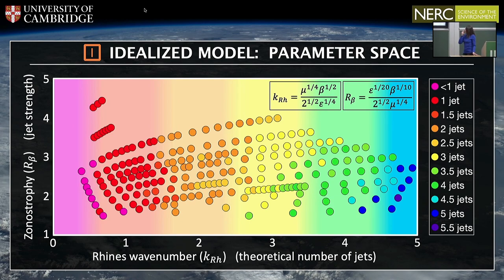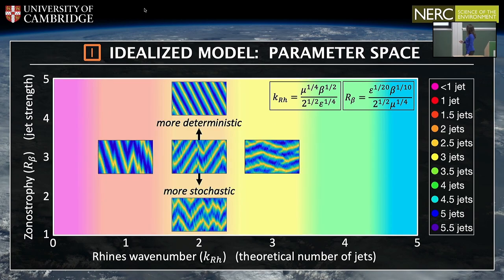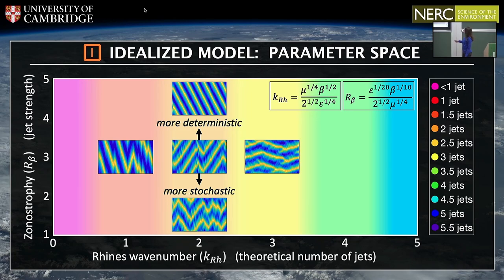It turns out migration is happening over subintervals of the Rhines scale. To summarise parameter space in terms of migration: as the Rhines wave number increases, you see increasing numbers of jets migrating. As the zonostrophy changes, for larger zonostrophy the jets behave more deterministically, but as zonostrophy decreases they behave in a more stochastic nature — they're able to change direction much more frequently.